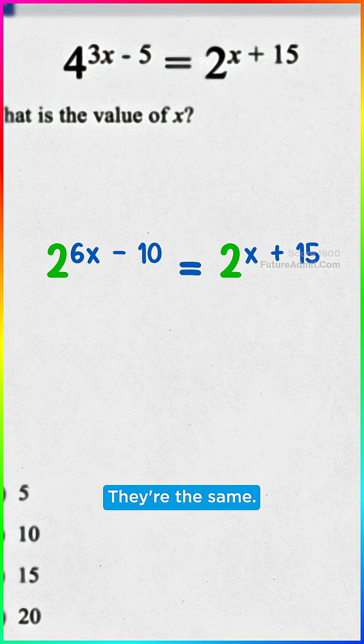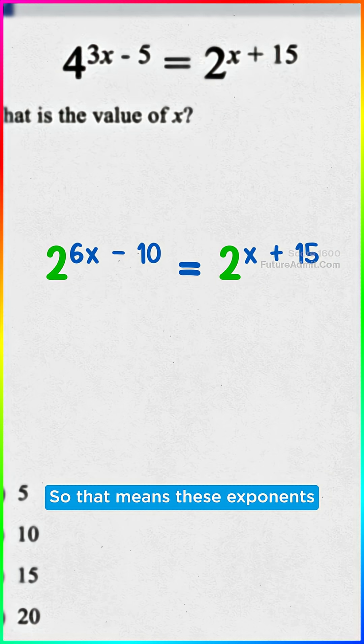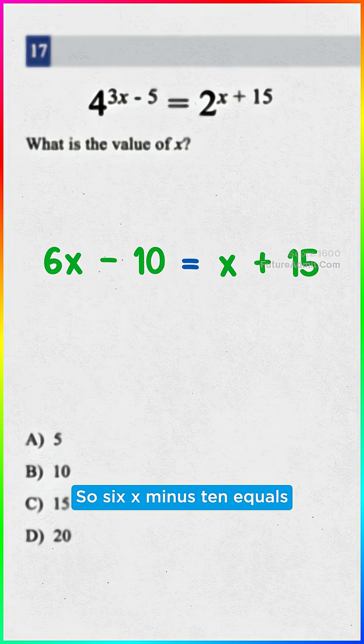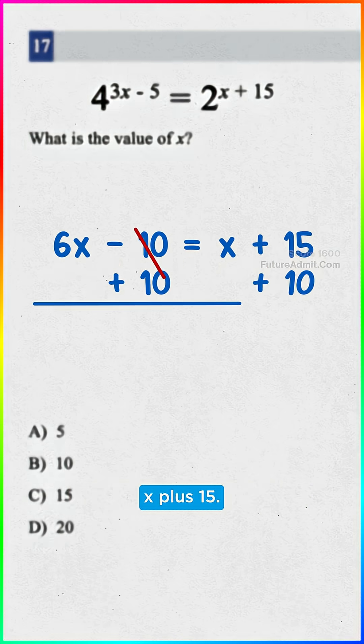And look at the bases, they're the same, so that means these exponents must be equal to each other because this left side must equal the right. So 6x minus 10 equals x plus 15.